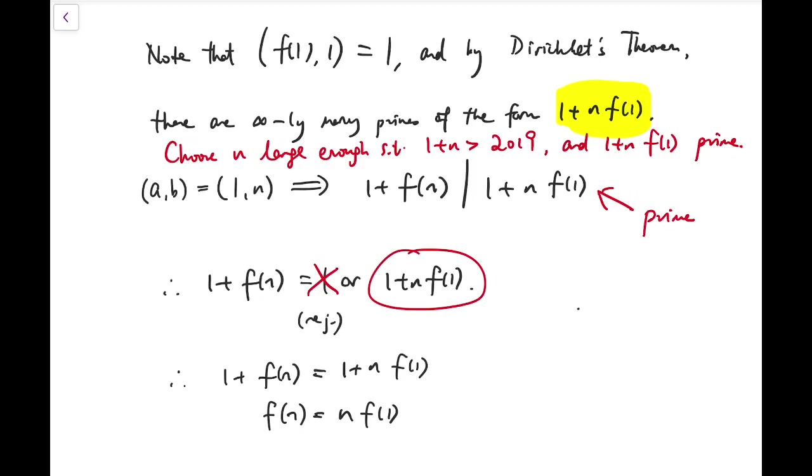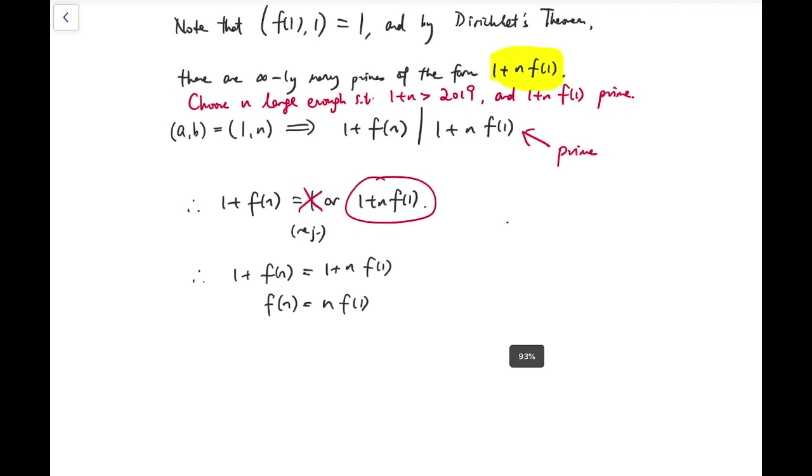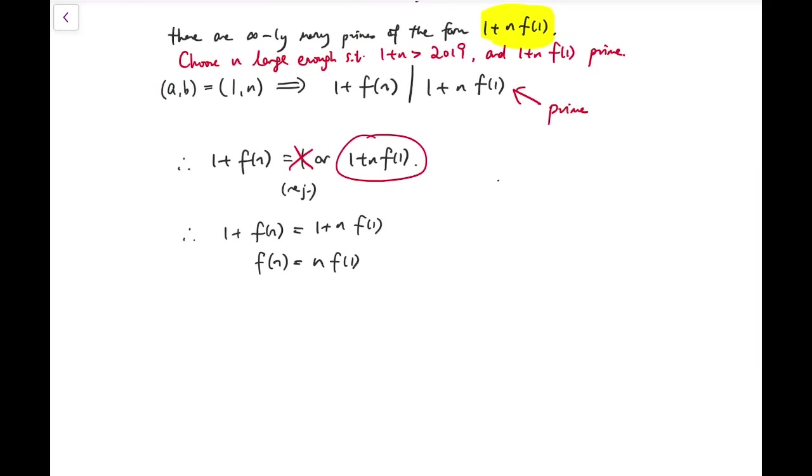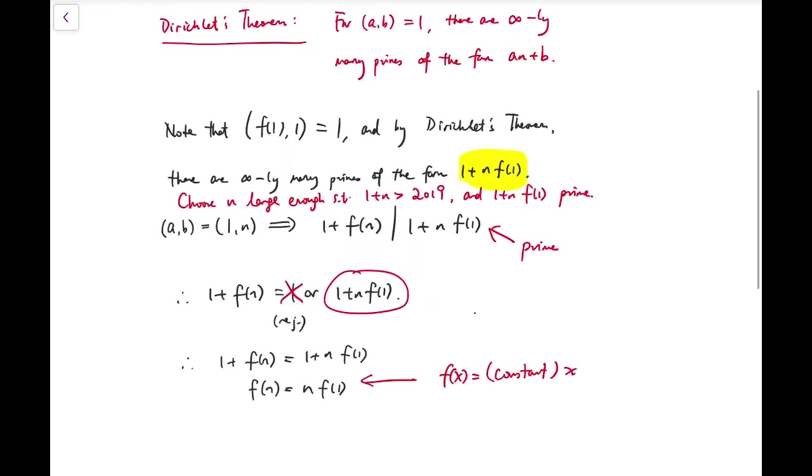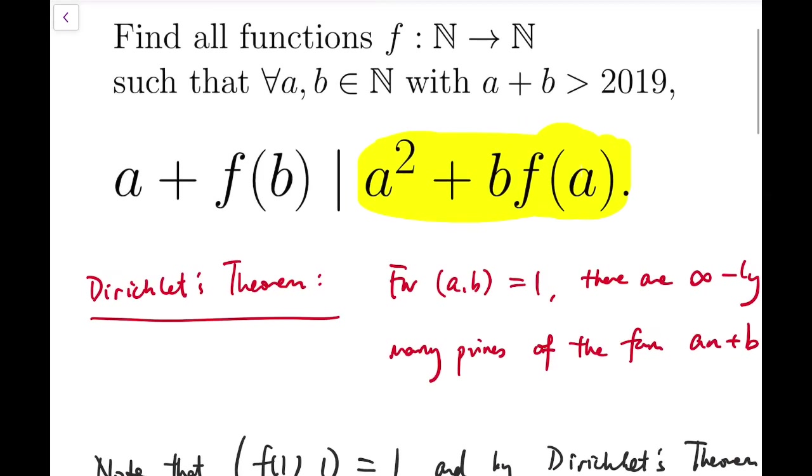And this holds for some n that is large enough. Now, when I reach this point, I start to think, well, what f of x can actually be? So this motivates me to guess that maybe f of x is simply some constant time x.